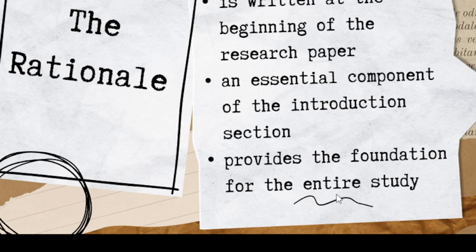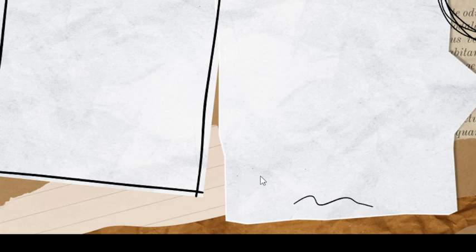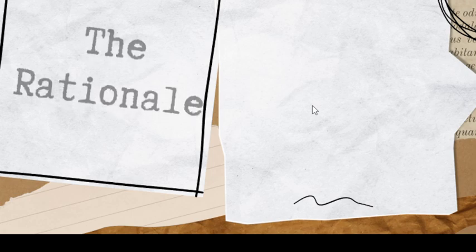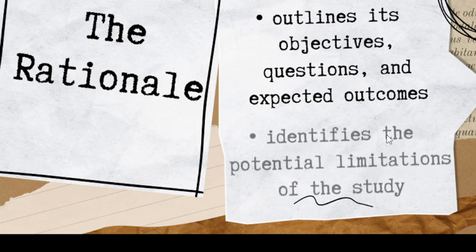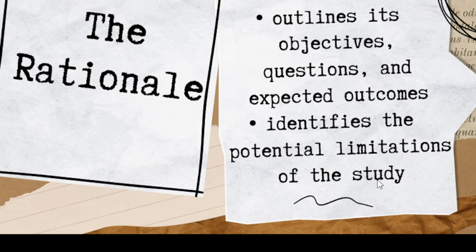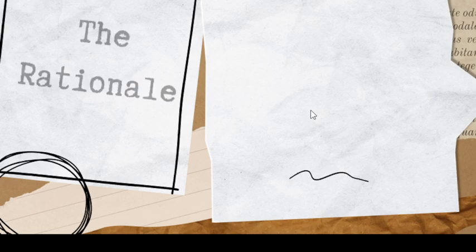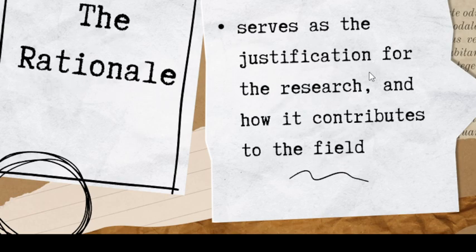It provides the foundation of the entire study — everything starts in the rationale, and then the rest of the chapters follow based on what you have written there. The rationale outlines its objectives, questions, and expected outcomes. It also identifies the potential limitations of the study — for example, how many participants, who the participants are, and the locale or setting — provide that in your rationale.